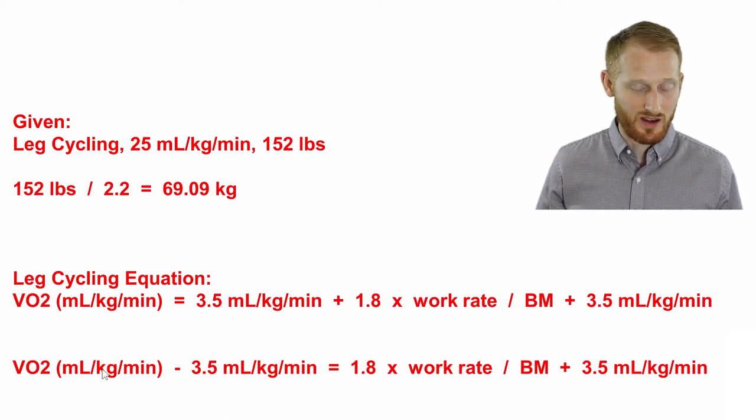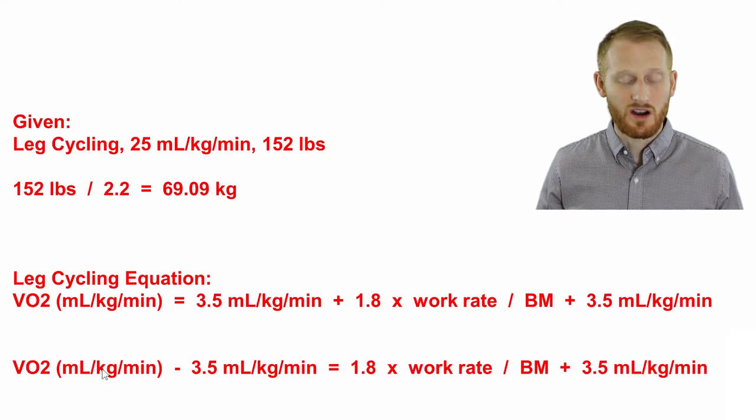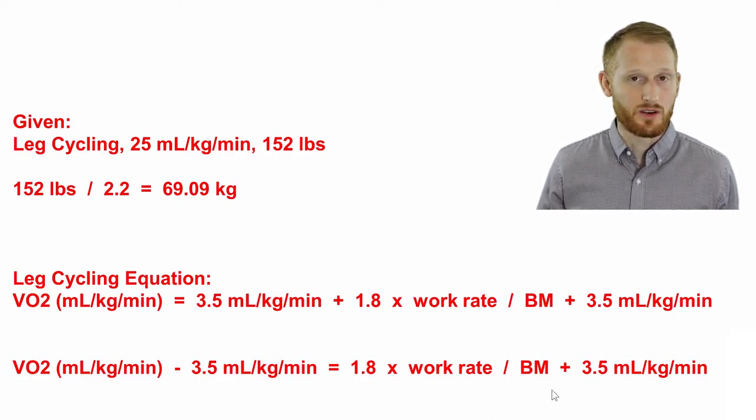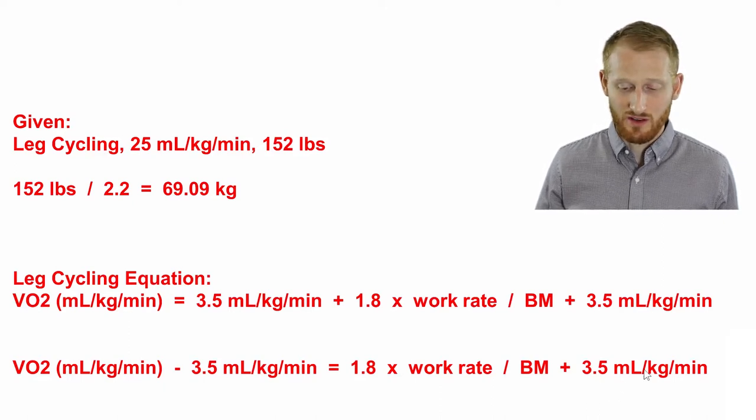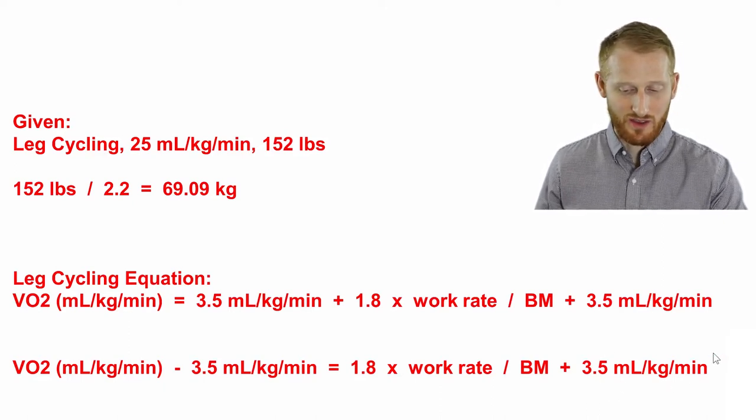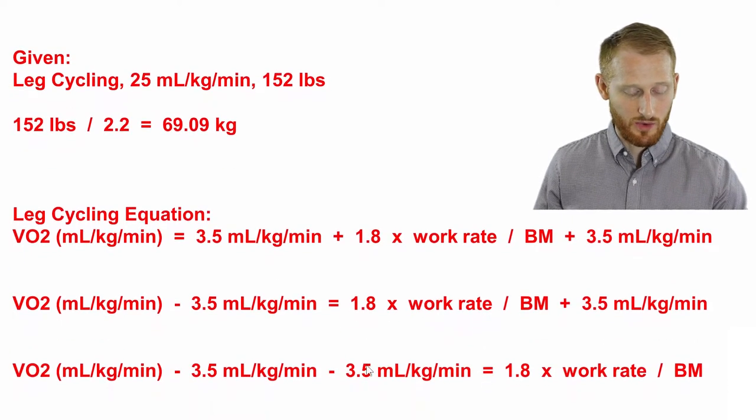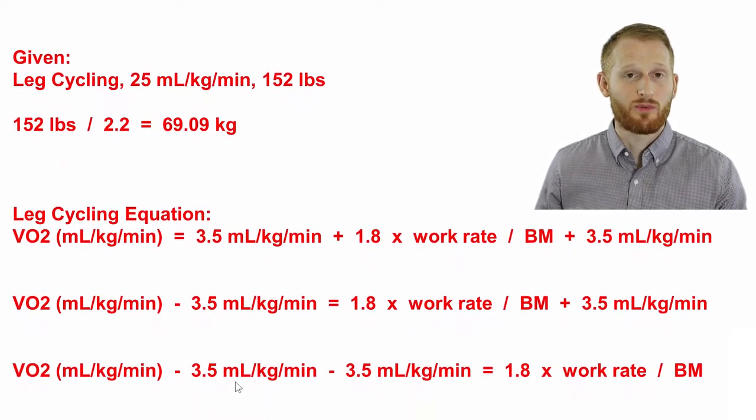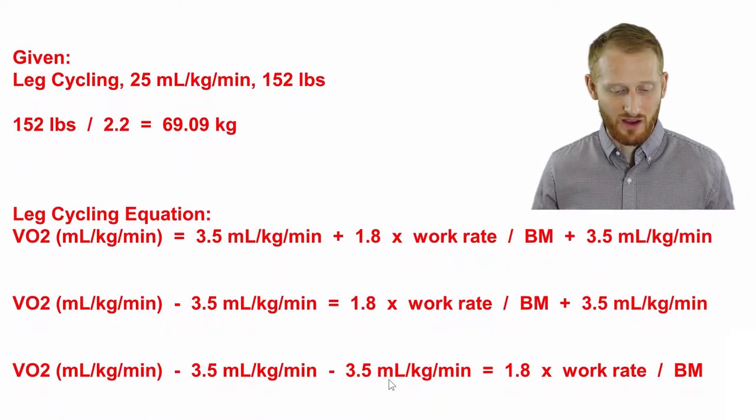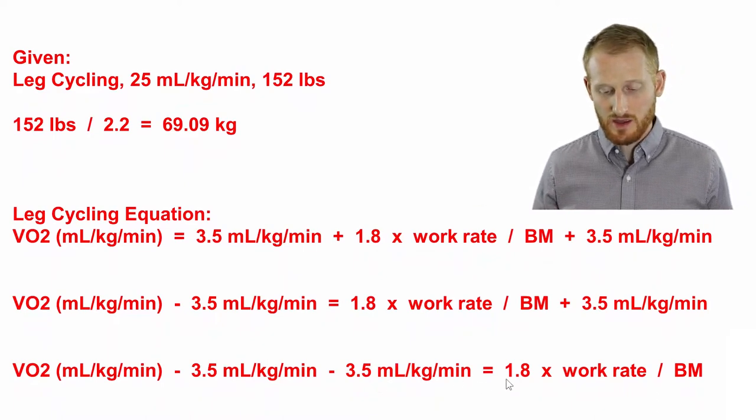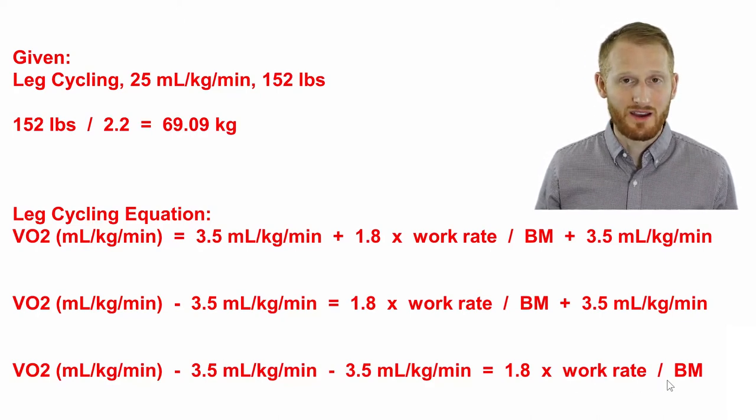We end up with mls per kg per minute of their relative oxygen consumption minus 3.5 equals the rest of the equation. The next thing I'm going to do is get rid of the other 3.5 by doing the same thing. So I'm going to subtract that from both sides of the equation and we end up with VO2 minus 3.5 minus another 3.5, which you could combine and just make it minus 7, equals 1.8 times the work rate divided by body mass.